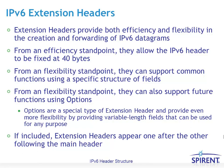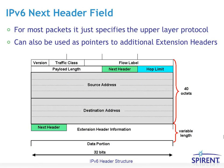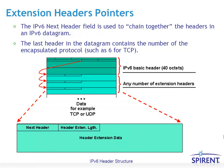If included, extension headers appear one after another following the main header. The IPv6 header is a fixed 40 octets in length, followed by one or more additional headers as indicated by the next header field. Using the next header field from the IPv6 header and then from each extension header, they can be chained along indefinitely — whereas IPv4 had a fixed internet header length field which limited the options that could be carried.